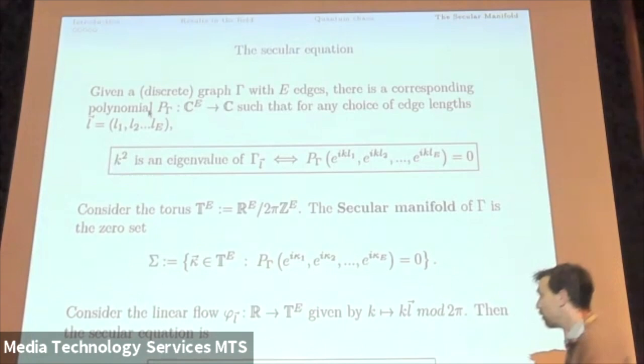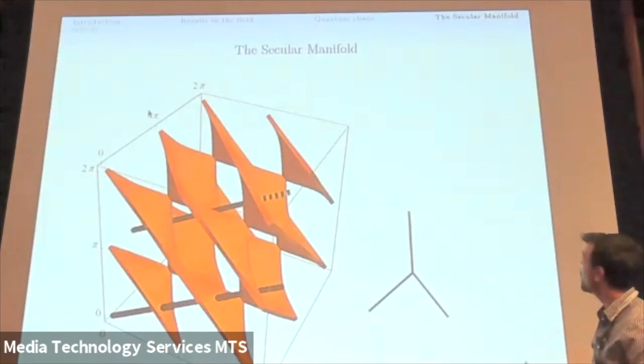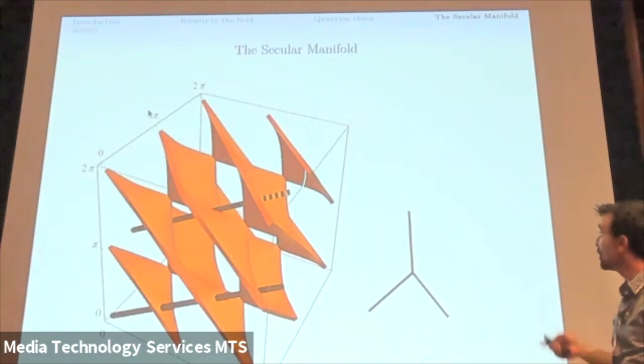This linear flow enables me to present the secular equation as follows. So now K squared is an eigenvalue whenever K is a hitting time of the linear flow hitting the secular manifold. So let's look at it. For example, this graph and the orange manifold here is the secular manifold. It's a three-dimensional torus.